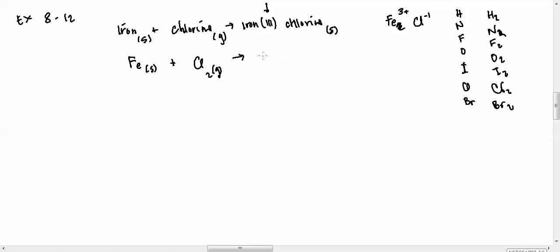So essentially, if I wanted to write this down, it's Fe with no number there, and then I've got 3 chlorines, FeCl3. And this is a solid. Now, you would think that we're done here, but all we've done is convert the name into a formula, but we haven't made sure that the left side and the right side are balanced.